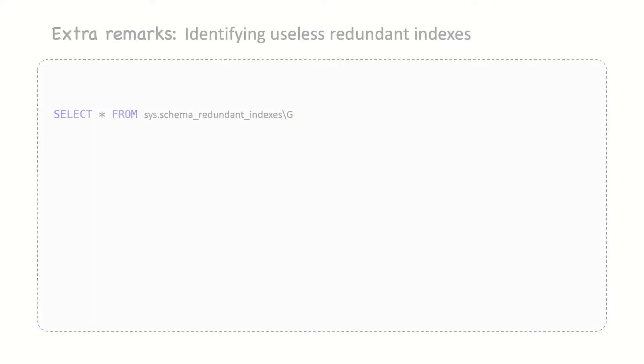First, we need to identify them. We can write various complicated queries against the information schema tables, but there is a much simpler technique. This view from the sys schema can be used to find redundant indexes.